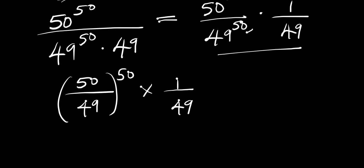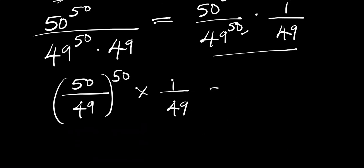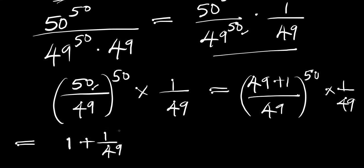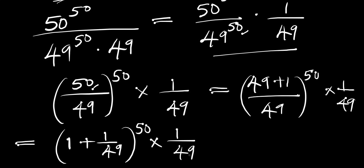The next thing we can do is write 50 as 49 plus 1, divided by 49, all to the power of 50, times 1 divided by 49. Dividing through, this gives us 1 plus 1 divided by 49, all to the power of 50, times 1 divided by 49.